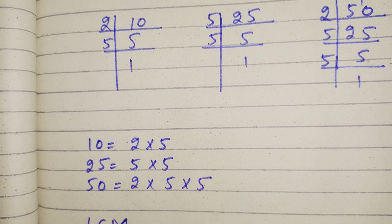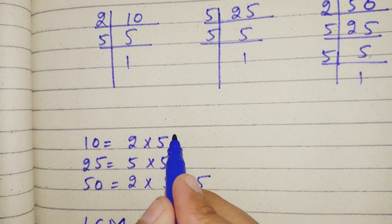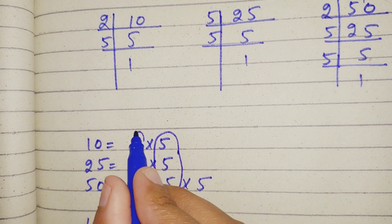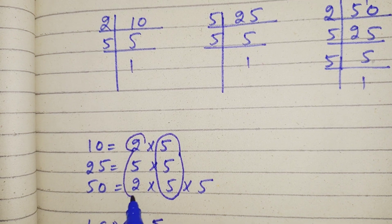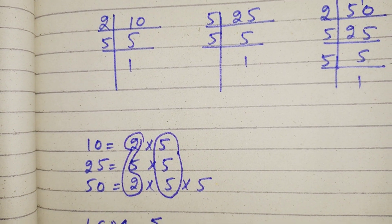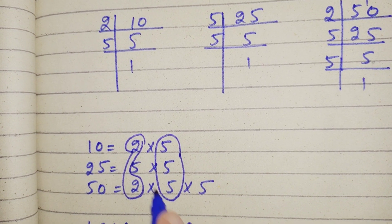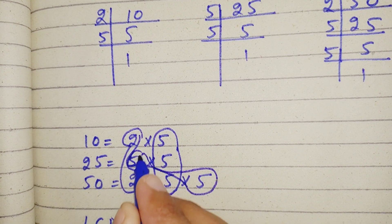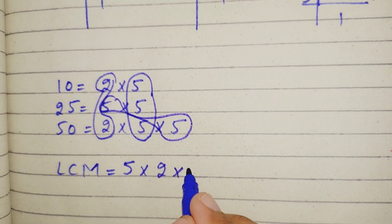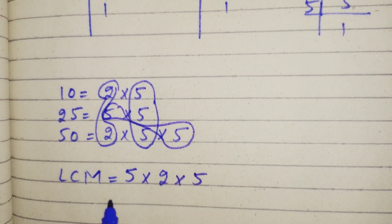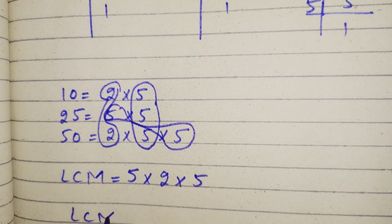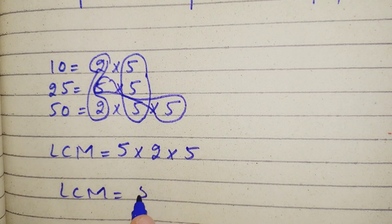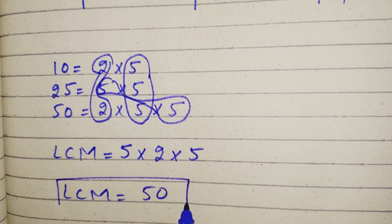سب سے پہلے ہم کونسے فیکٹرز دیکھیں گے: 5. اس کے علاوہ 2 بھی ہے، 5 multiply by 2. اس کے علاوہ یہ 5 بھی ہے، multiply by 5. LCM is equal to: 5 2s are 10, 10 5s are 50. LCM is equal to 50.